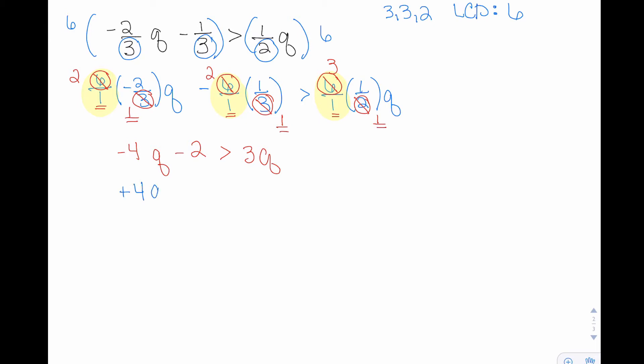I could go ahead and combine the Q terms at this point by adding four Q to both sides. Then we've got negative two is greater than seven Q, and then I can divide both sides by seven.